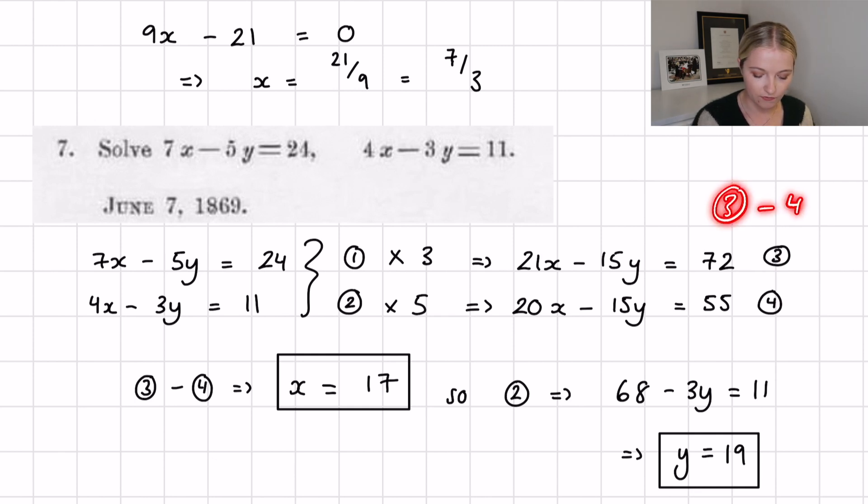I've labeled them 3 and 4. If I was to take 3 minus 4, the y value here would disappear because we'd have minus 15y minus minus 15y and that would become a plus, so that would equal zero. So I did 3 minus 4, we get x equals 17 because when we do 3 minus 4 we have 21x minus 20 which is of course 1, and 72 minus 55 is of course 17. So we find that x is 17, really really nice.